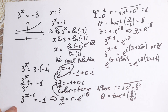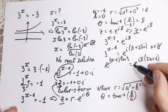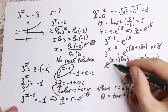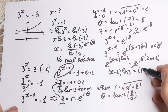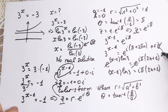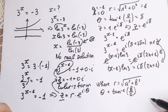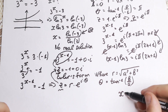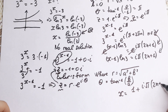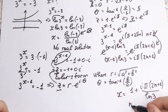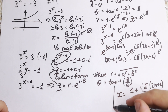Let's find x. We cancel the e on both sides, giving (x minus 1) times natural log 3 equals i times pi times (2n plus 1), where n is a set of whole integers. Dividing through, x equals 1 plus i times pi times (2n plus 1) over natural log 3. This is our solution.